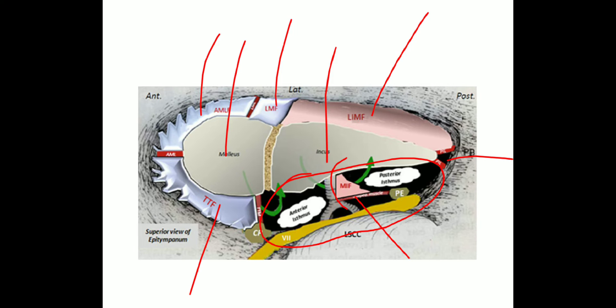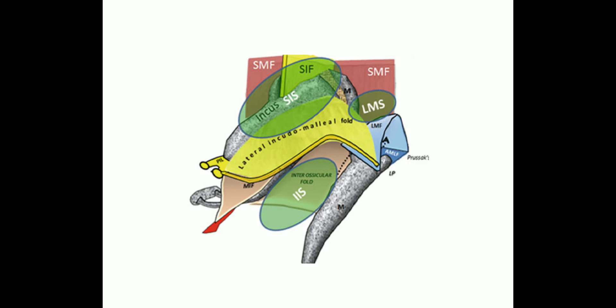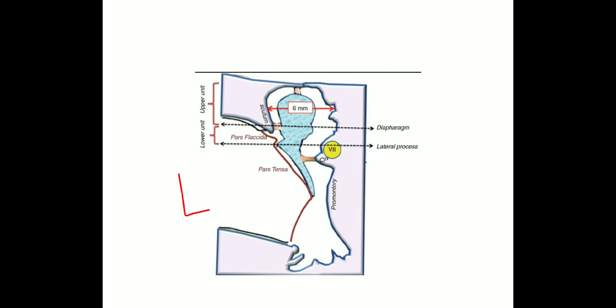The tympanic isthmus is divided by the medial incudal fold into an anterior tympanic isthmus and a posterior tympanic isthmus. The tympanic diaphragm is not fully horizontal because its components are at different levels: the lateral incudomalleal fold is almost one millimeter higher than the lateral malleal fold, and the medial incudal fold is below the level of the lateral malleal fold.